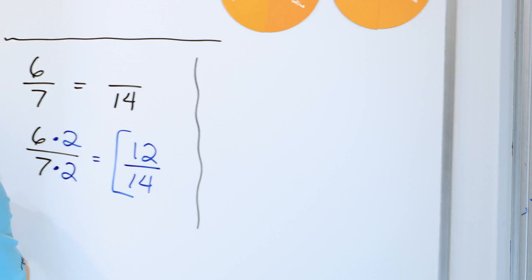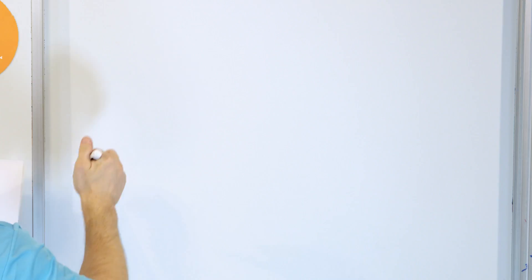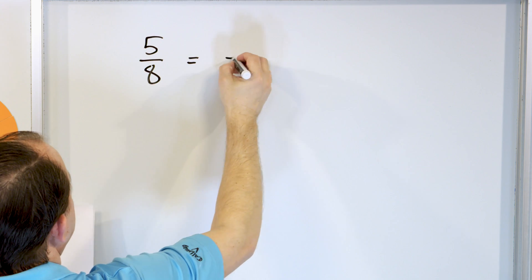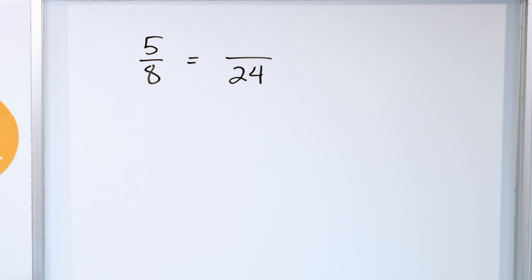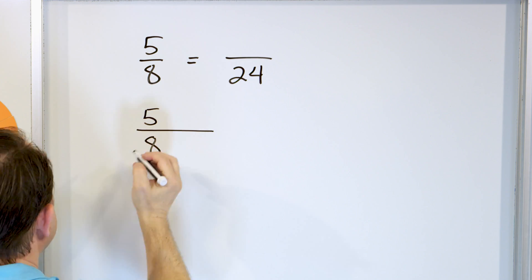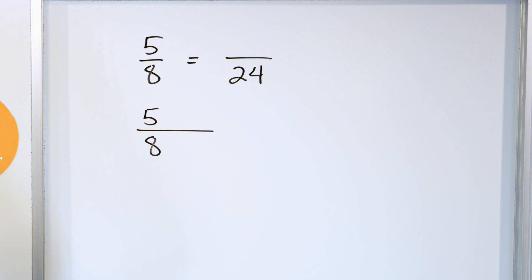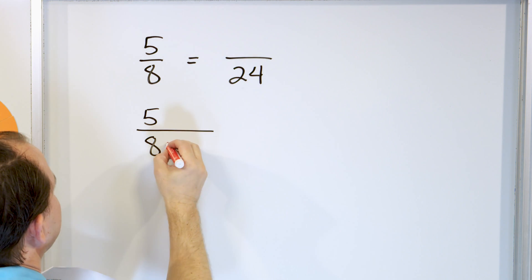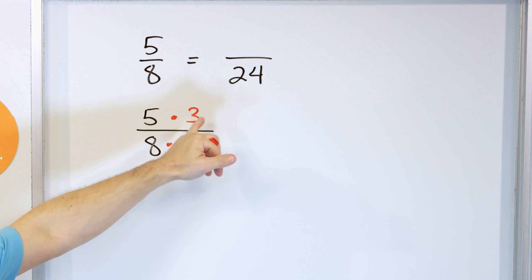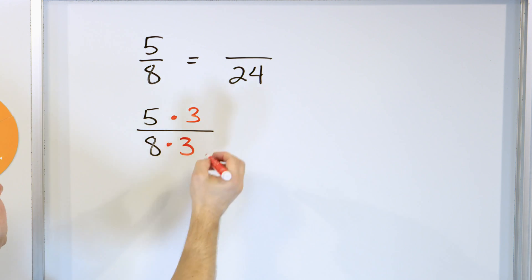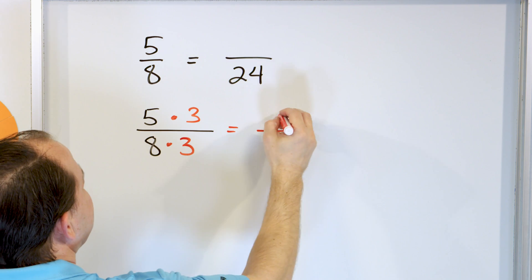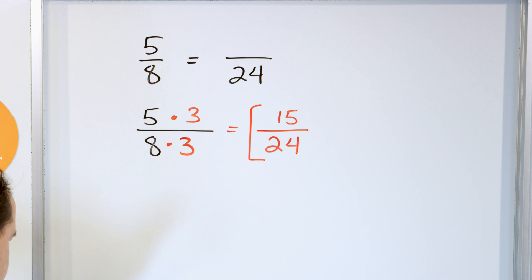All right. Let's take a look at the problem 5/8, and we're going to set that equal to a new fraction with 24 on the bottom. So we have this fraction and we can multiply it by anything we want. We want a 24 on the bottom, so we have to multiply by 3 on the bottom, and therefore we must multiply by 3 on the top to keep it balanced. On the bottom, 8 times 3 is 24. On the top, 5 times 3 is 15. And so the answer is 15/24. That's the final answer.